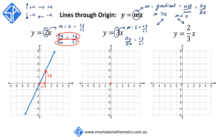Starting from the origin, we're going to move right by one unit — that's our run Δx. Our rise Δy is plus 3, so we move up 3 units to get our next point. We then join up the two points to get the graph y is equal to 3x.